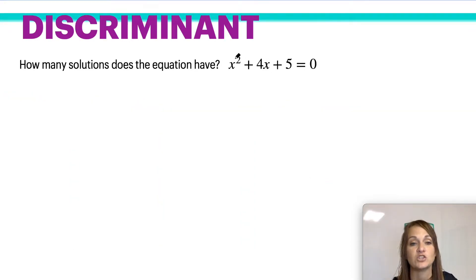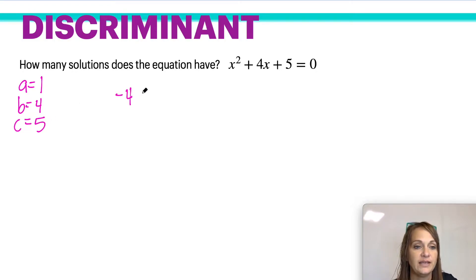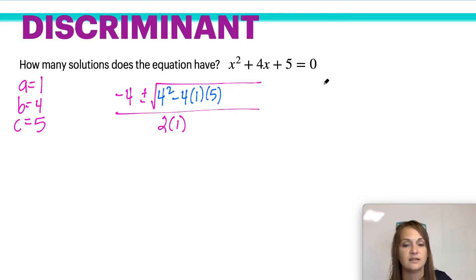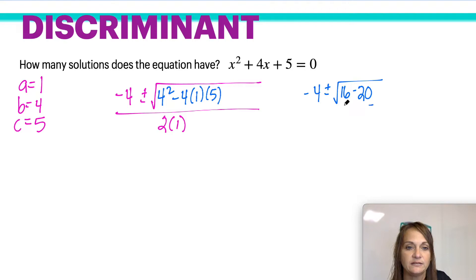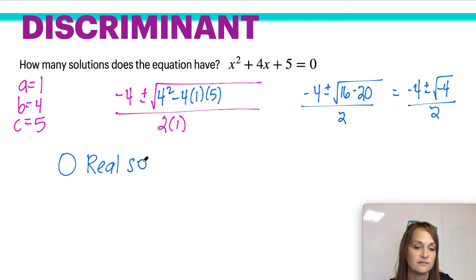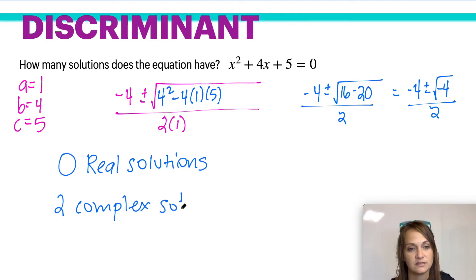For example, how many solutions does the equation have? We know that a is 1, b is 4, and c is 5. The discriminant — what's happening inside the square root — is b squared minus 4 times a times c, which gives us 4 squared is 16, minus 20. We know that 16 minus 20 is negative 4. So automatically, since it is a negative number, you're going to have zero real solutions and two complex solutions.